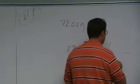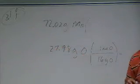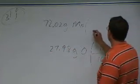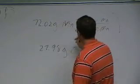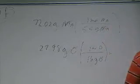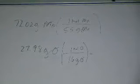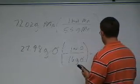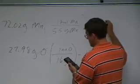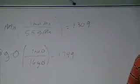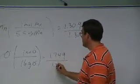Oxygen weighs 16. How much does manganese weigh? 55 grams — that's one mole of manganese. So 27.98 divided by 16 gives 1.749, and manganese gives 1.309. Now, divide by the smallest, which is 1.309. That equals 1.309 for manganese and 1.333 for oxygen.